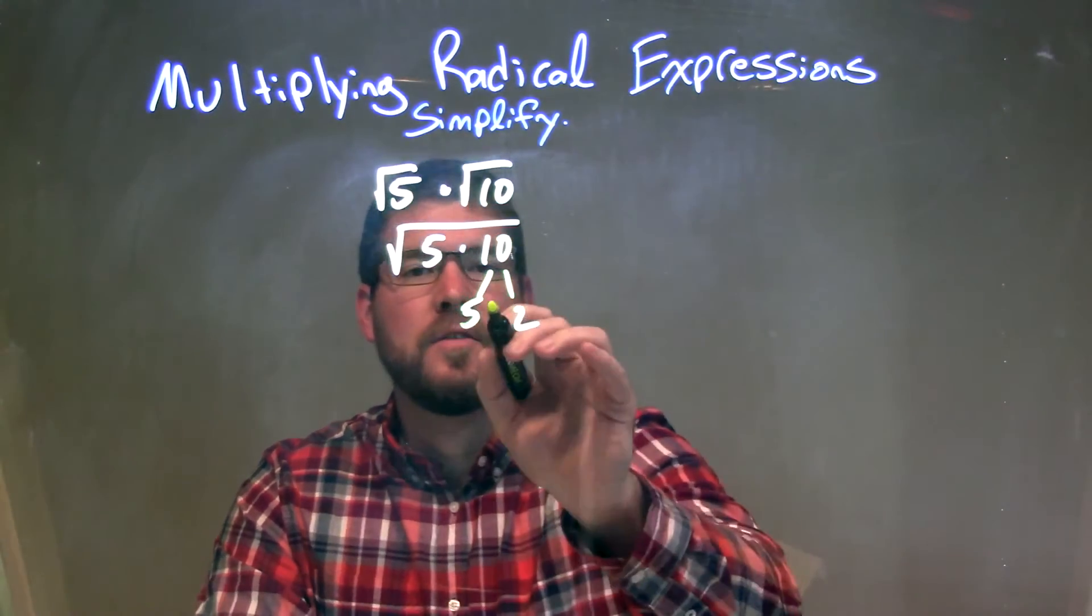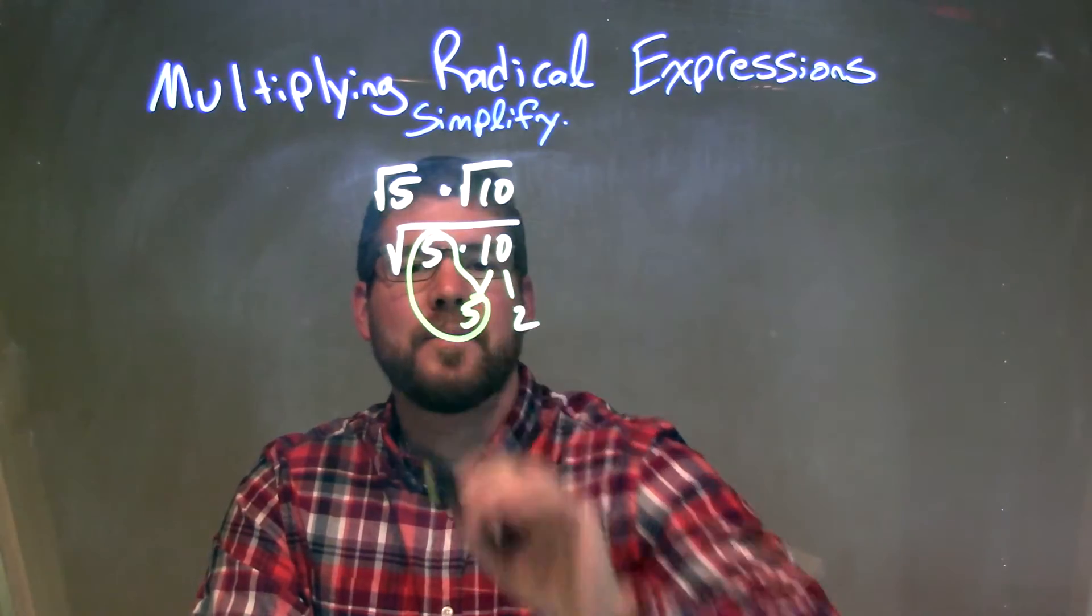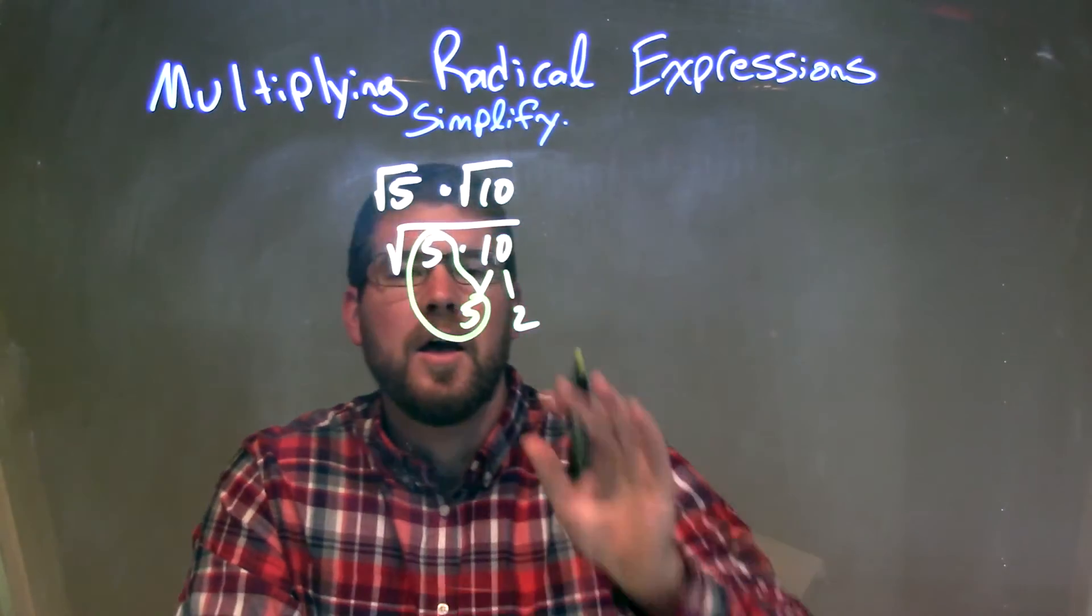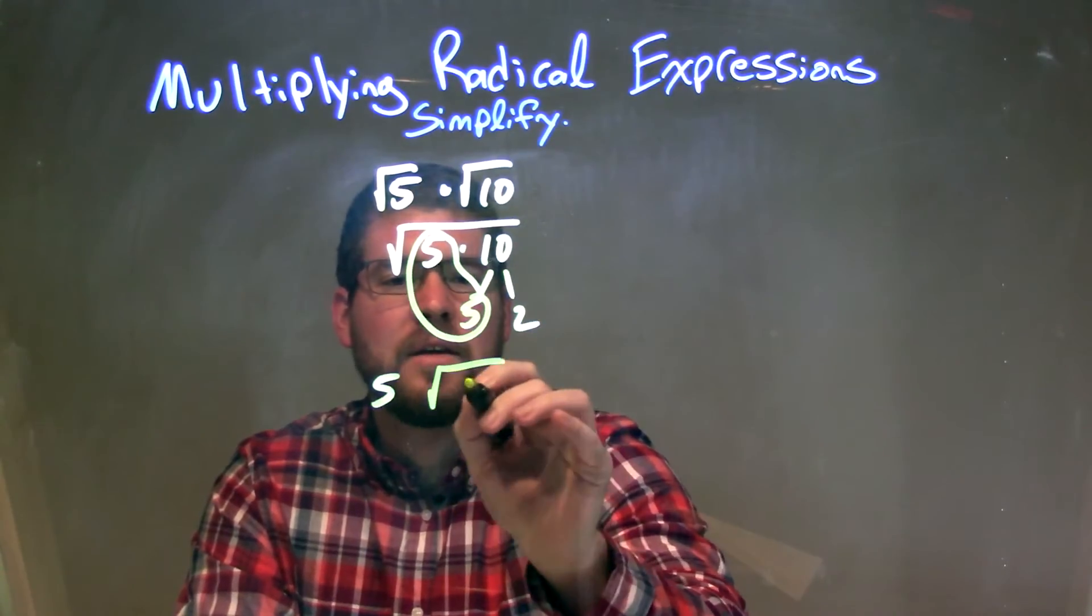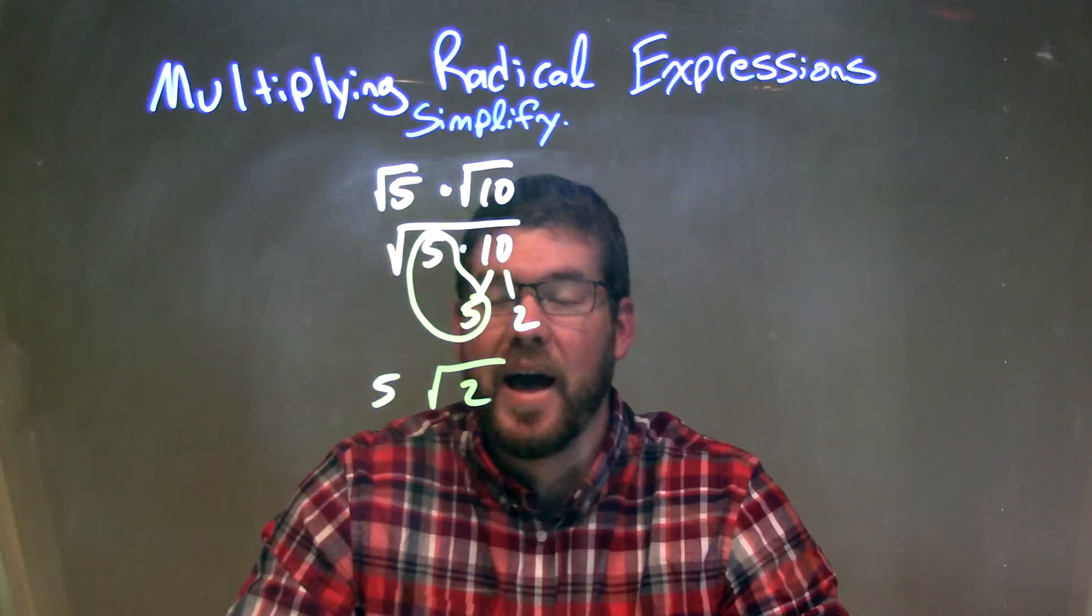So, now I want to circle my pairs. I have a pair of 5s right here, a pair of 5s right there. A pair of 5s bring a single 5 to the outside. We're left with 2, just left over on the inside, and there we have it.